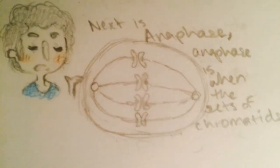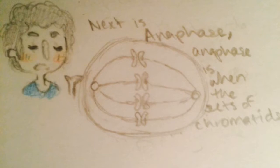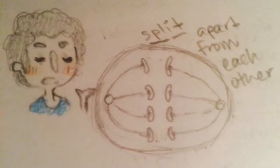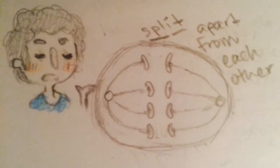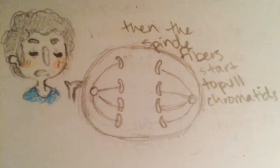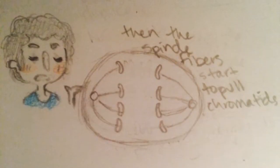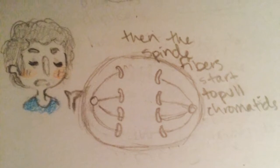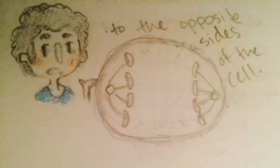Next is anaphase. Anaphase is when the sister chromatids split apart from each other, and then the spindle fibers start to pull the sister chromatids to the opposite side of the cell.